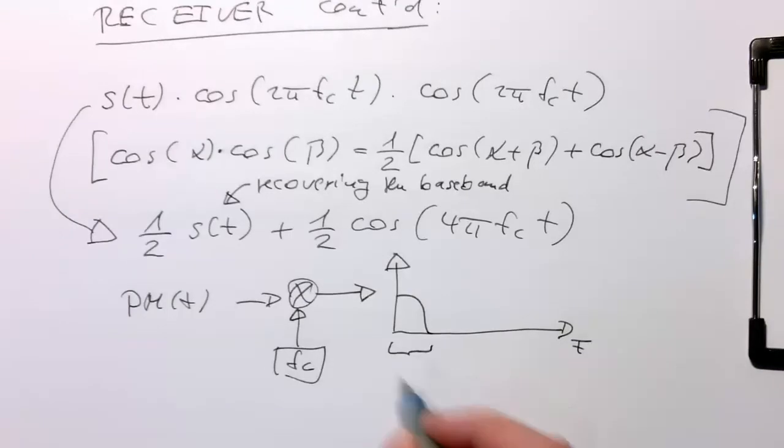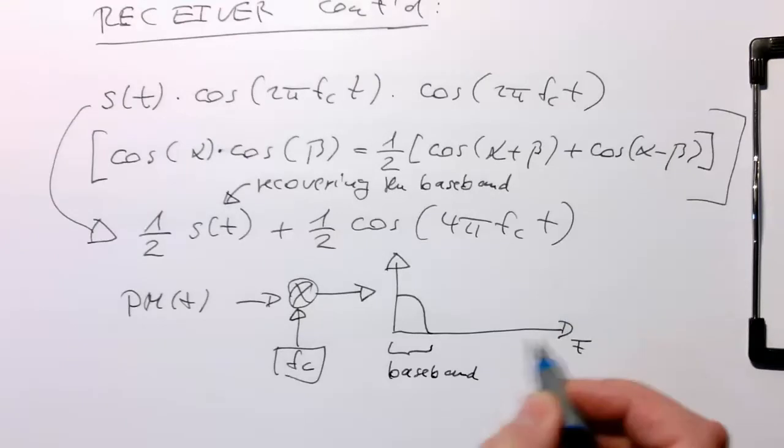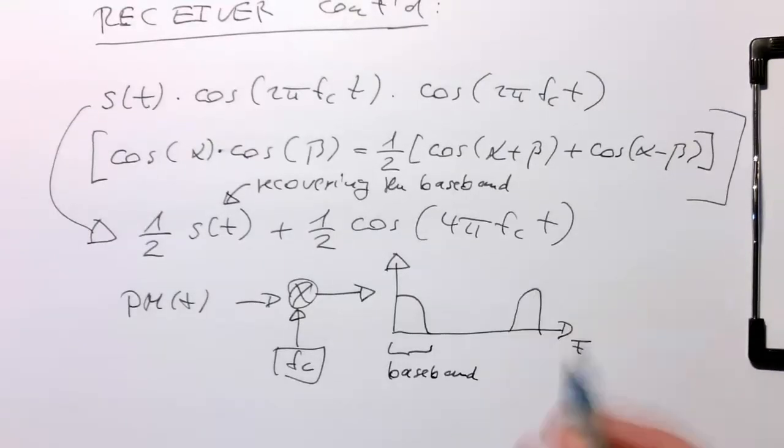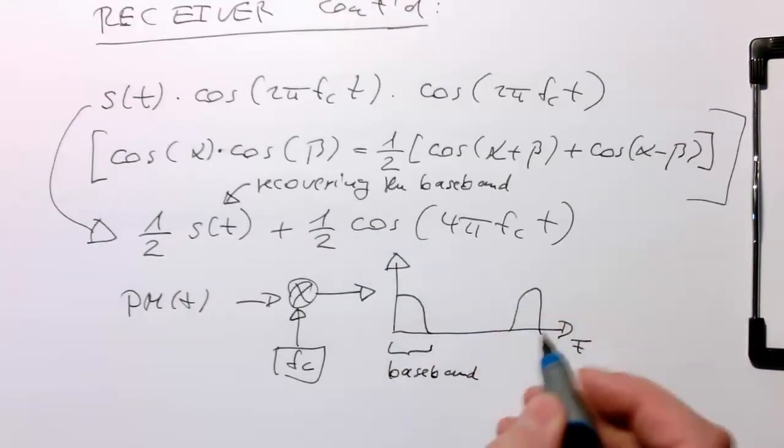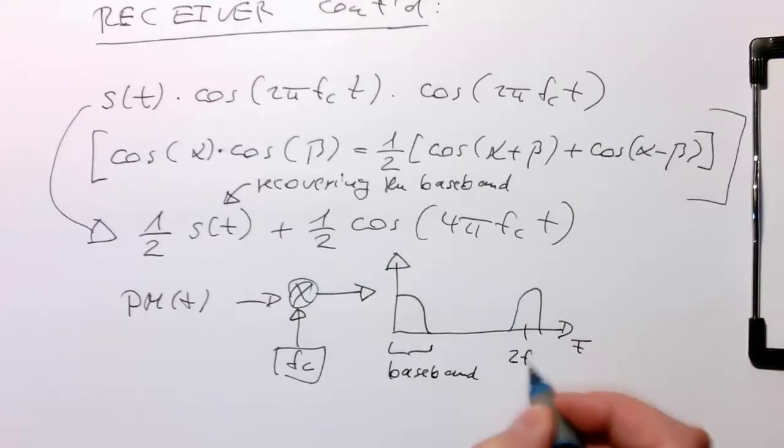If you think of this in frequencies, the output has our baseband here, and then a term at two times the carrier frequency, 2fc.